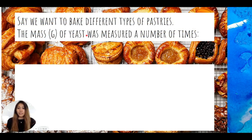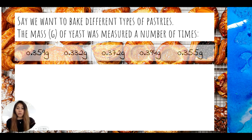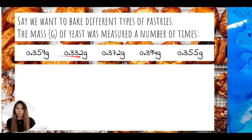This means, let's say we want to bake different types of pastries. The mass of yeast was measured a number of times for different batches of pastries. As we can see, we have 1, 2, 3, 4, 5 different values.